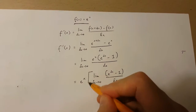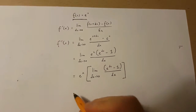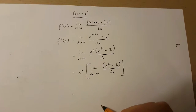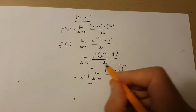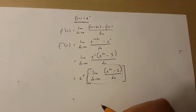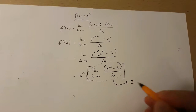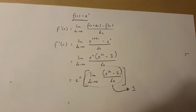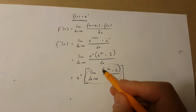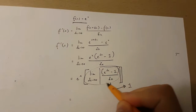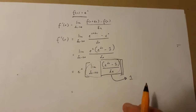Now I'm going to put this over here in brackets. It turns out that this over here is equal to 1. As change in x approaches 0, this expression over here is equal to 1.